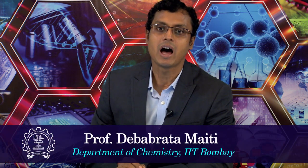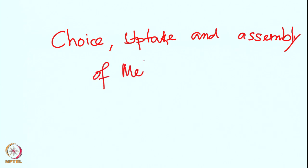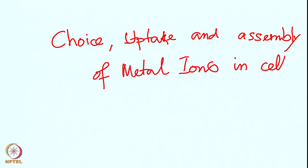Hello, welcome everyone to the second class of metals in biology. Today we will discuss choice, uptake and assembly of metal ions in cells. Let us first discuss the principle of this topic: choice, uptake and assembly of metal ions in cells.